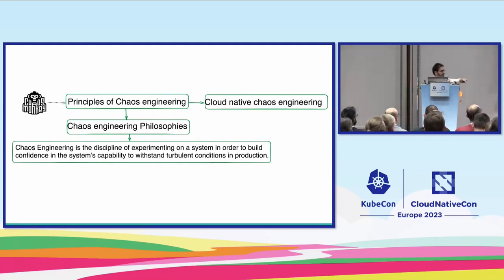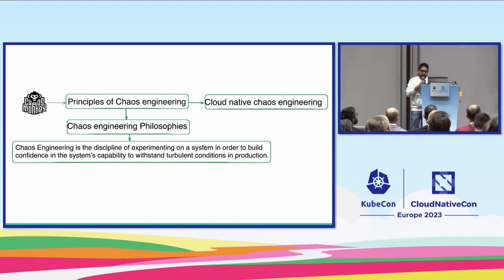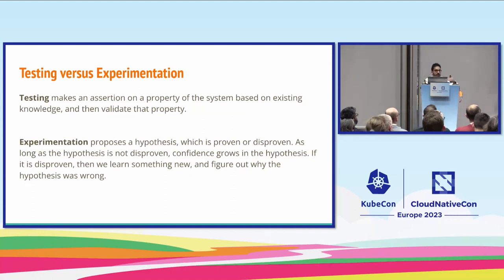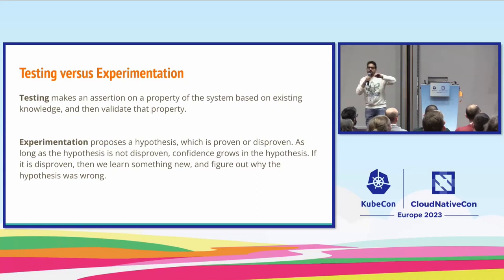We inject a failure into a system and observe the behavior. If everything works fine, great. If not, our system needs modifications to tackle that particular bug. Regular testing makes an assertion on a known property and validates it. Chaos engineering is more interested in experimentation — we define a hypothesis that is either proven or disproven. As long as it is not disproven, confidence grows; if disproven, we learn something is wrong and can fix and improve.